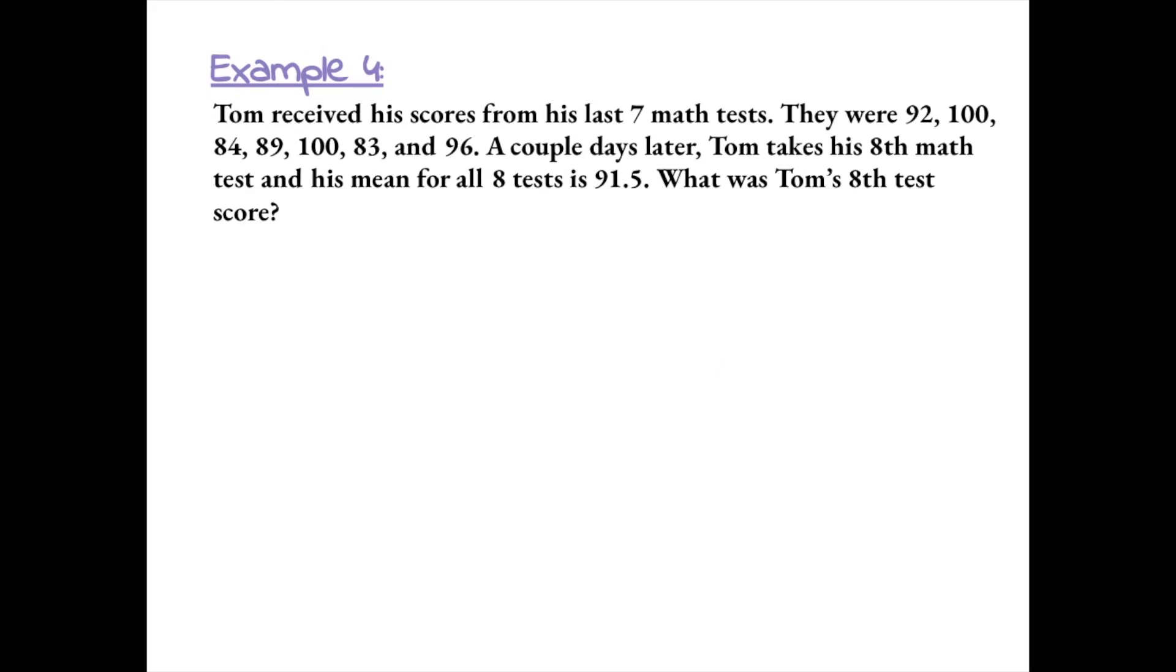Example 4, Tom received his scores from his last 7 math tests. They were the following scores. A couple days later, Tom takes his 8th math test and his mean for all 8 tests is 91.5. What was Tom's 8th test score? So this one is a little bit different because we know his mean, but we don't know one of his test scores. So let's set up the problem as we normally would, but use a variable for Tom's 8th test score. So I used x as my variable for Tom's 8th test score. Now we're going to divide all of these numbers by 8 tests. Lastly, we're going to set this equal to 91.5 because in the problem we're given that Tom's mean is 91.5.